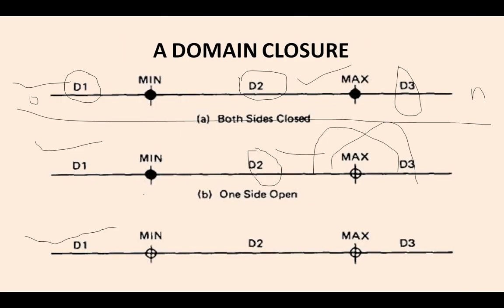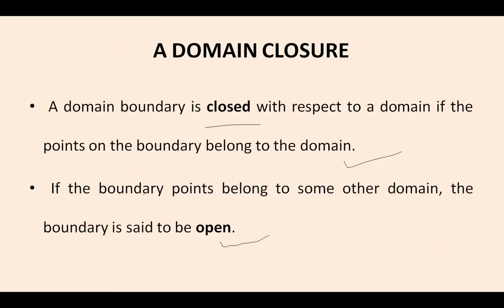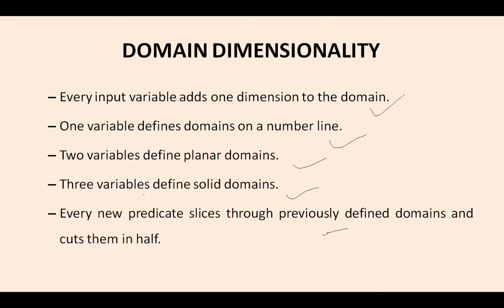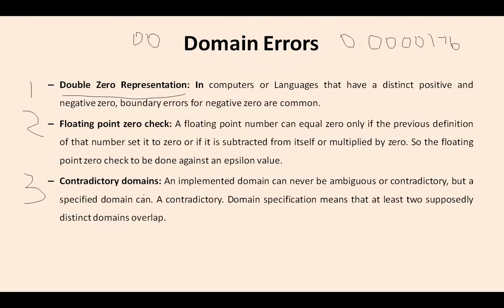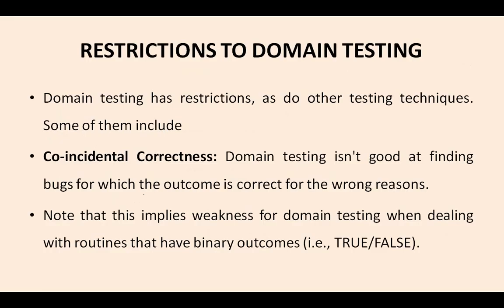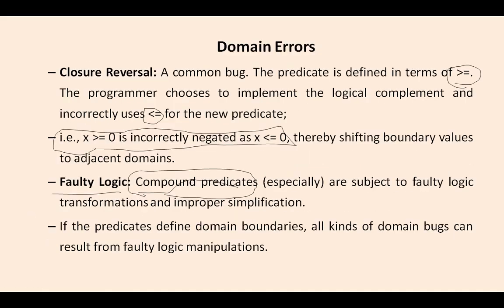These are the domain dimensionalities, domain closure, open and closed domains, and various domain errors — double zero representation, floating point zero check, contradictory domains, ambiguous domains, over-specified domains, boundary errors, closure reversal, and faulty logic. We stop here and in the next video we will discuss the restrictions to domain testing. Thank you for watching, thank you one and all.